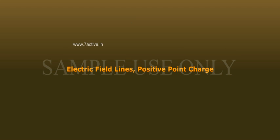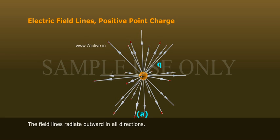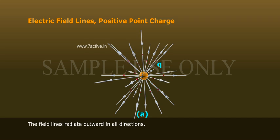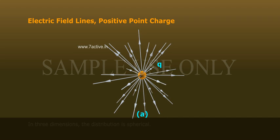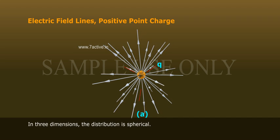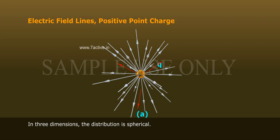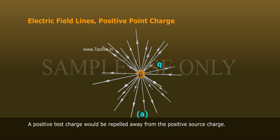For a positive point charge, the field lines radiate outward in all directions. In three dimensions, the distribution is spherical. The lines are directed away from the source charge, and a positive test charge would be repelled away from the positive source charge.